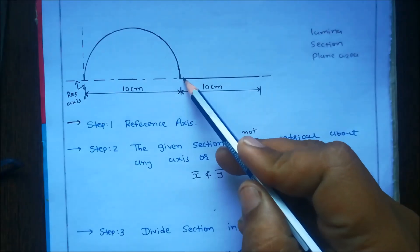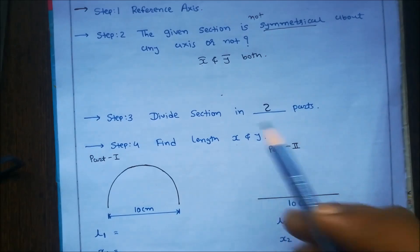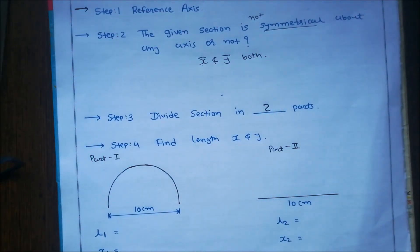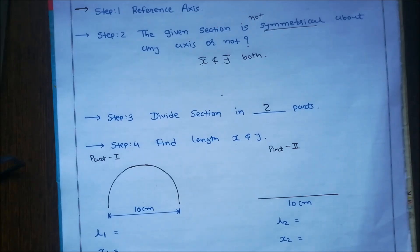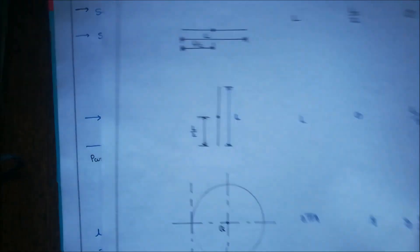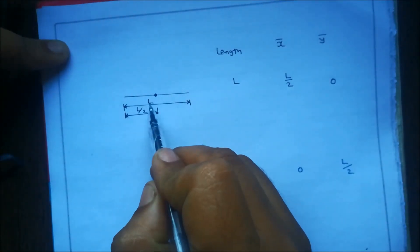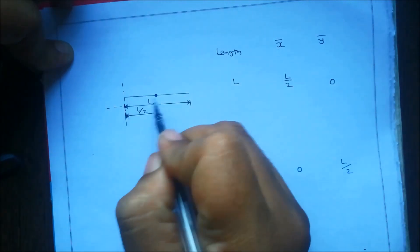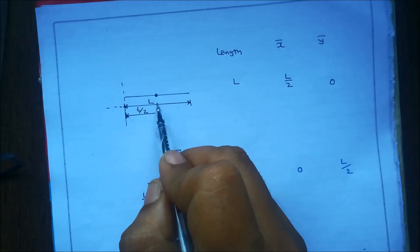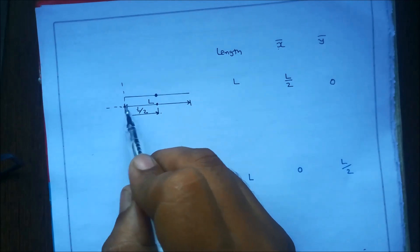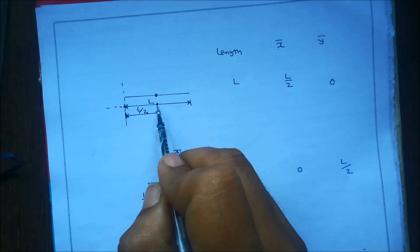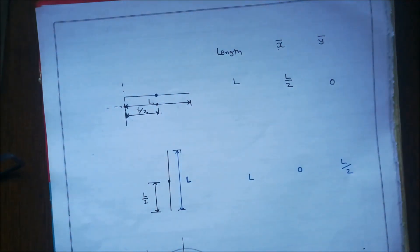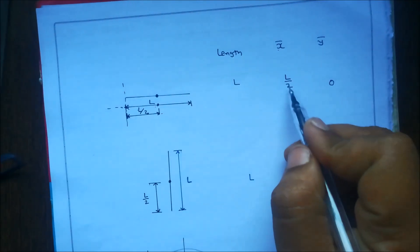In step number four, find the length, X, and Y. We find length here because this is a one-dimensional example. In a one-dimensional problem we find length; in a two-dimensional problem we find area. First we find the length of the semicircle and the length of the horizontal line. For a horizontal line of length L, the centroid is at its middle, so the horizontal distance from the reference axis is L/2, meaning X-bar = L/2.